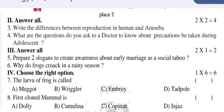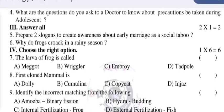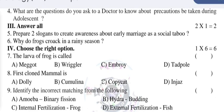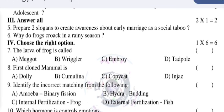Answer all. Number five: Prepare two slogans to create awareness about early marriage as a social evil. Number six: Why do frogs croak in the rainy season? Number seven: Choose the right option — the larva of a frog is called...